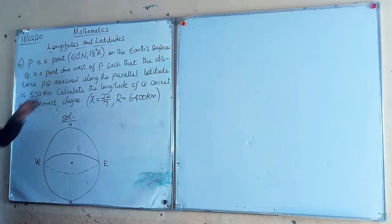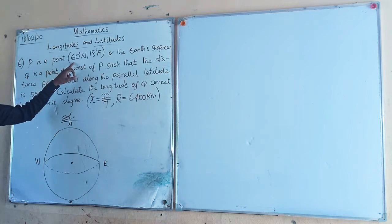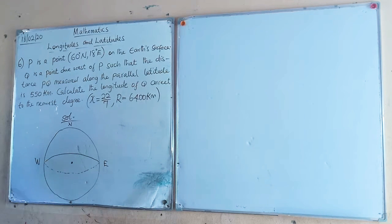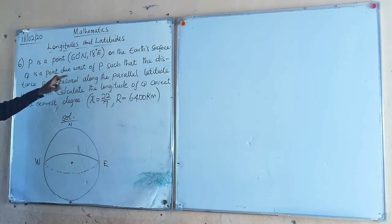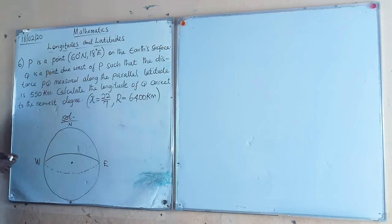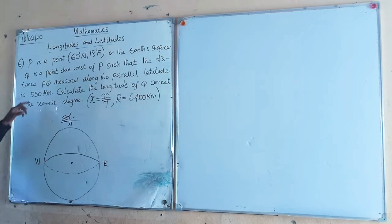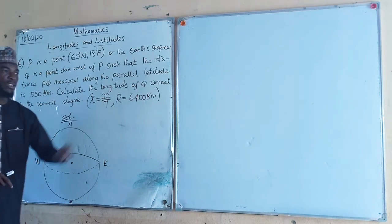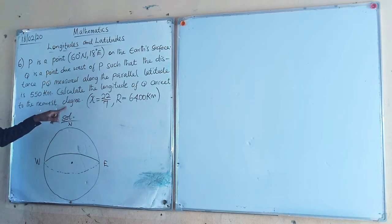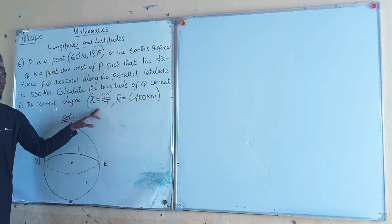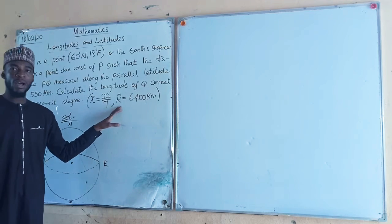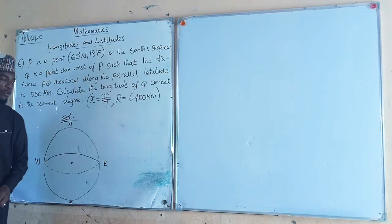P is a point on latitude 60 degrees north and longitude 80 degrees east on the earth's surface. Q is a point due west of P such that the distance between P and Q, measured along the parallel of latitude, is 550 kilometers. Calculate the longitude of Q, correct to the nearest degree. We are given pi as 22 over 7 and the radius of the earth R as 6400 kilometers.